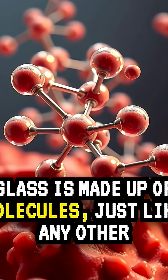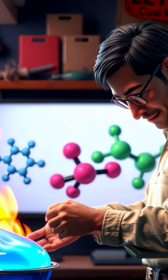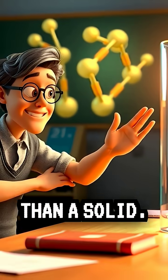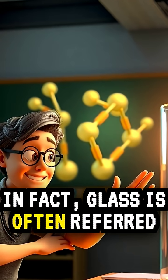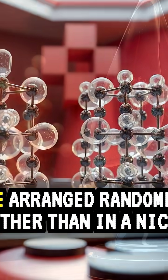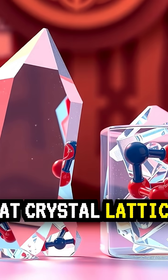Glass is made up of molecules, just like any other substance. But what's key here is that glass has a molecular structure that's more like a liquid than a solid. In fact, glass is often referred to as an amorphous solid. That means its molecules are arranged randomly, rather than in a nice, neat crystal lattice.